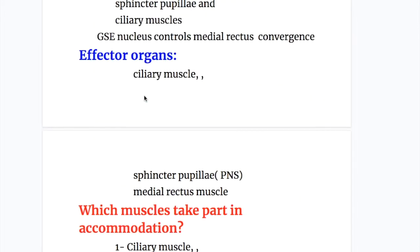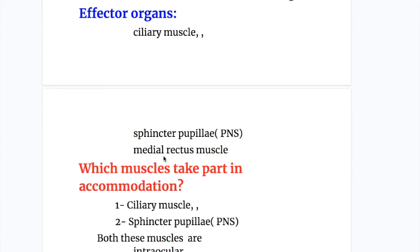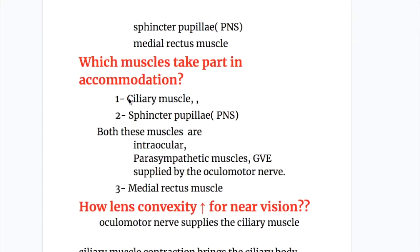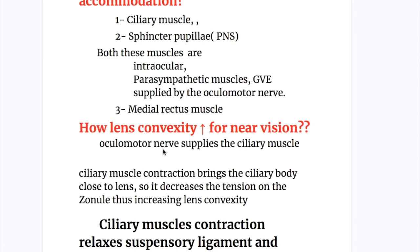The effector organs in the accommodation reflex are the ciliary muscles and sphincter pupillae — these are the parasympathetic components — and the medial rectus muscle, which is the general somatic efferent component. The ciliary muscle and sphincter pupillae are both intraocular, controlled by the general visceral efferent nucleus and supplied by the oculomotor nerve.